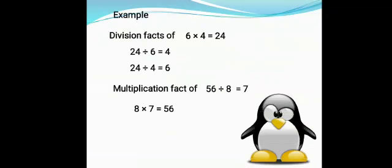Let's take one more example to explain this. Suppose you want to write division facts of 6 × 4 = 24. So the division facts will be: 24 ÷ 6 = 4, or 24 ÷ 4 = 6. Now write the multiplication fact of 56 ÷ 8 = 7. So the multiplication fact will be 8 × 7 = 56.